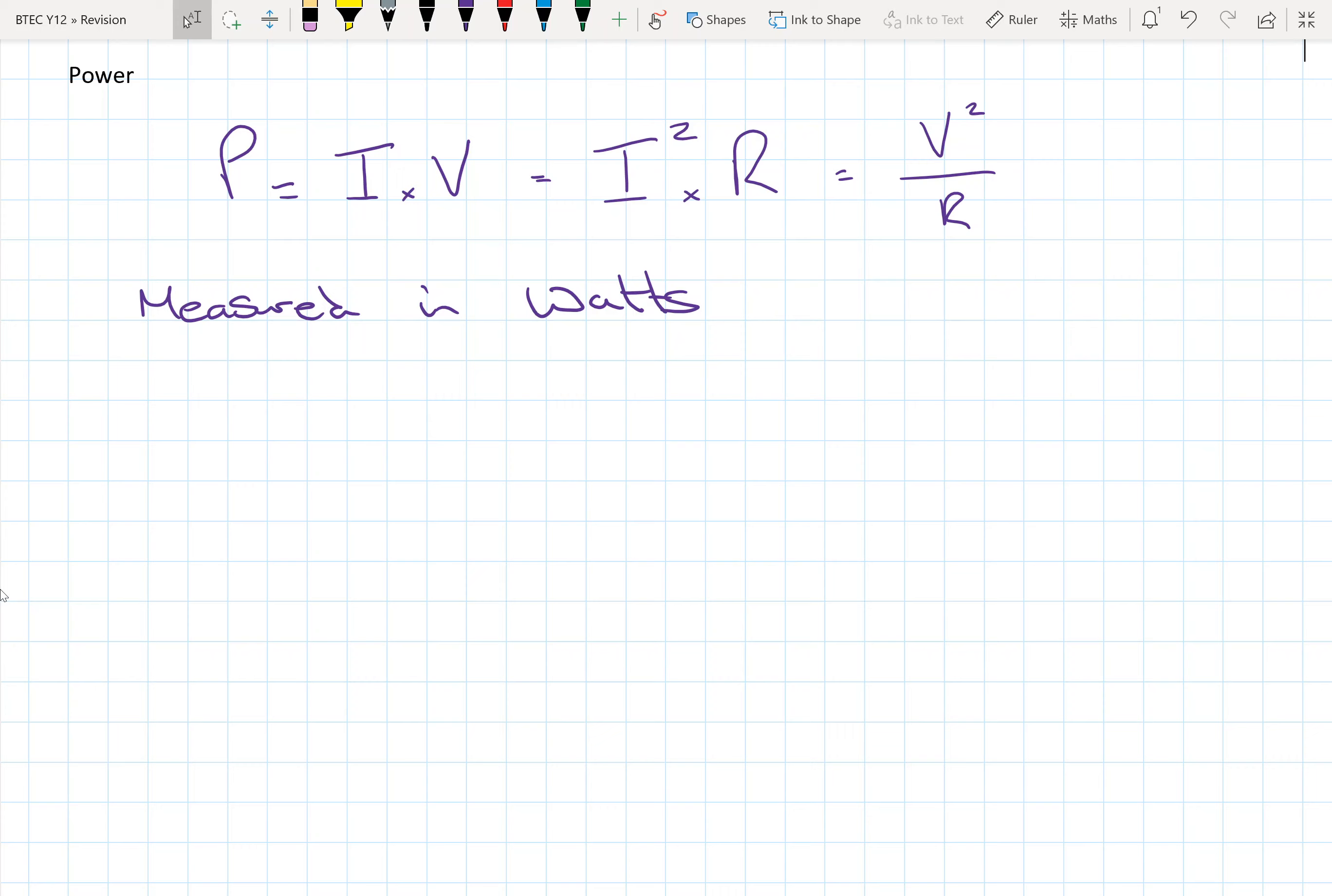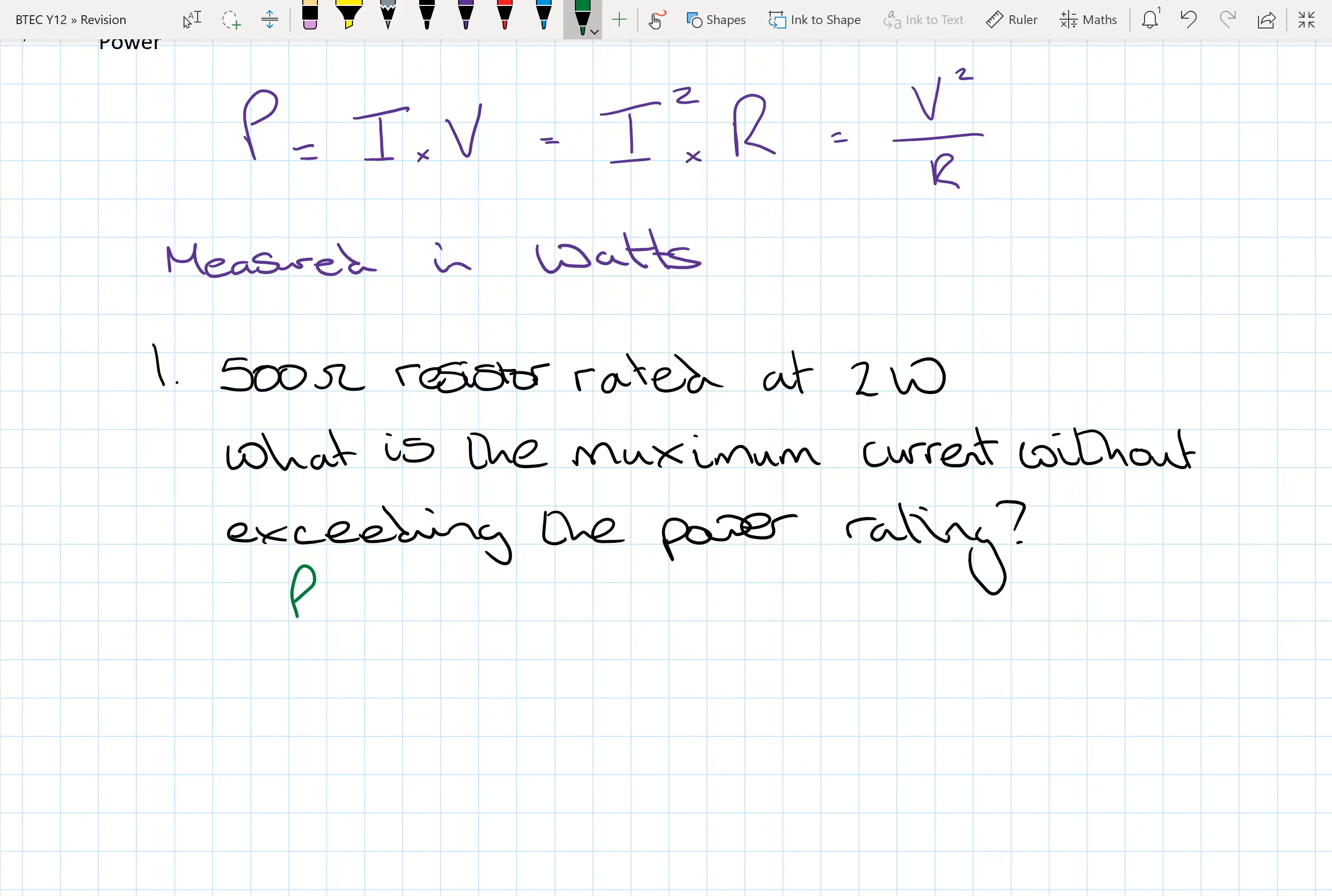Okay, let's start off with a question. So let's start off with the standard formula, power is equal to I squared R. So we know that we've got 2 watts is equal to I squared times by our 500-ohm resistor, so therefore we can do a little bit of rearranging.